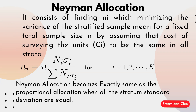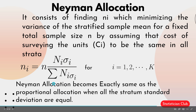Neyman allocation consists of finding n_i which minimizes the variance of the stratified sample mean for a fixed total sample size n, by assuming the cost of surveying a unit c_i to be the same in all strata. The formula is n_i = n × N_i σ_i / Σ(N_i σ_i), where i goes from 1 to k. Neyman allocation becomes exactly the same as proportional allocation when the stratum standard deviations are all equal.